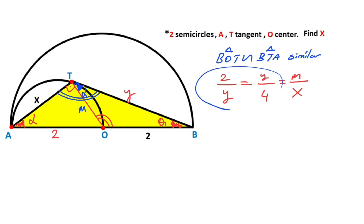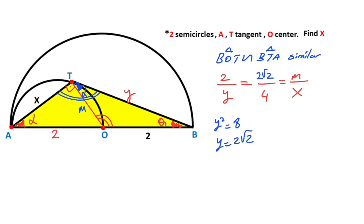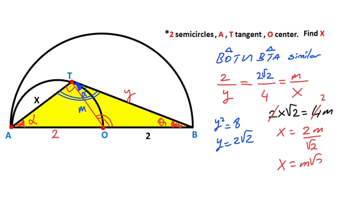Therefore, using the left-hand side of the equation, we get y squared equals 8, so y is going to be 2√2. Using the right-hand side of the equation, we get 2x√2 equals 4m. If we simplify, that means x equals 2m over √2, so x is going to be m√2.